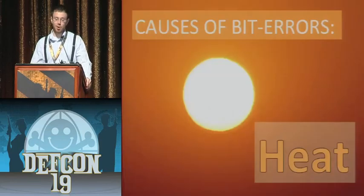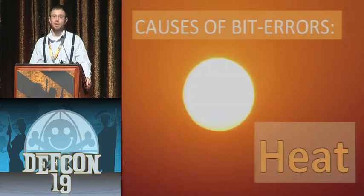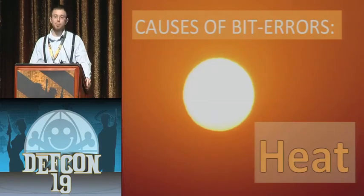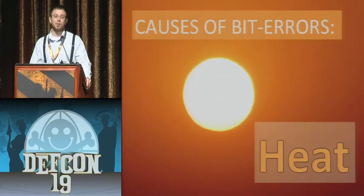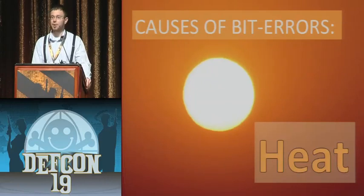There are other causes of bit errors besides probing and heat lamps. Cause number one is heat. It is a physical fact that heat affects properties of electrical devices, such as conductivity and resistivity. This isn't too much of a problem in desktops and maybe even laptops, because they're well cooled and normally operated indoors. But when it comes to mobile devices, heat can be a serious issue.